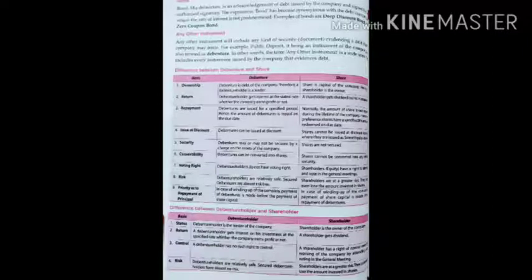Now the difference between debenture holder and shareholder. A debenture holder is the lender of the company while a shareholder is the owner. Return: a debenture holder gets interest on his investment at a specified rate whether the company earns profit or not, while a shareholder gets dividend. Control: a debenture holder has no right to control since he is just a lender, while a shareholder has a right to control the working of the company by attending and voting in the general meeting.